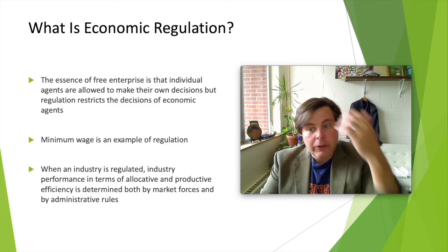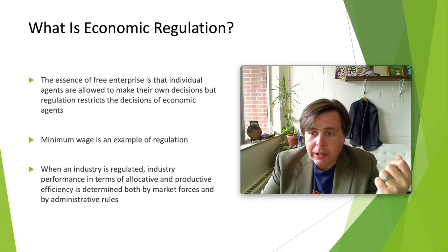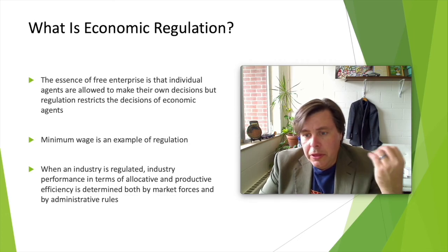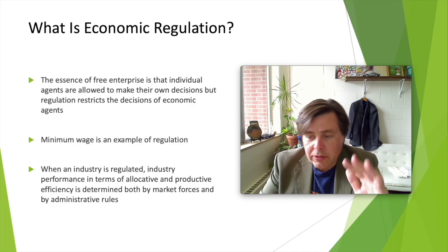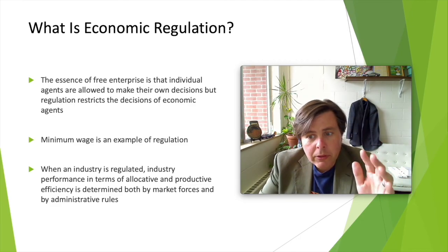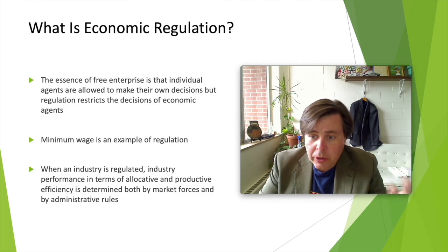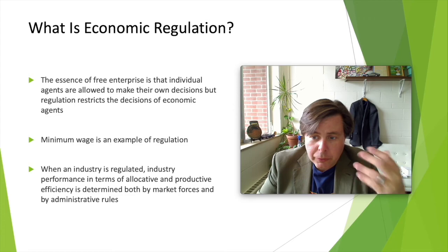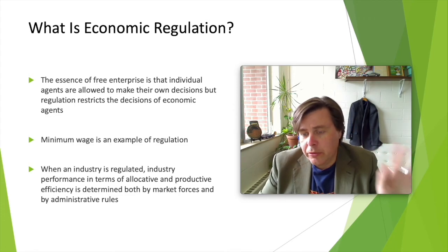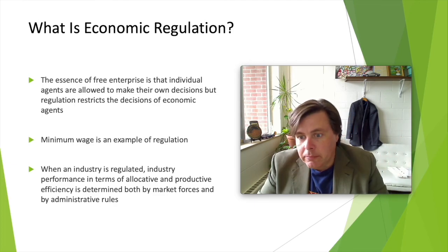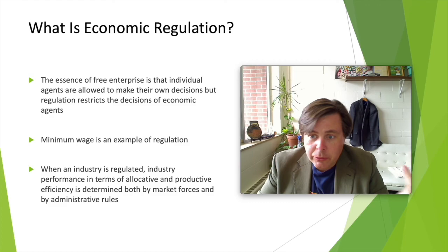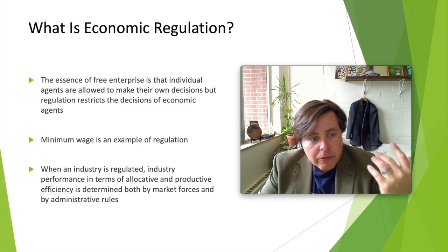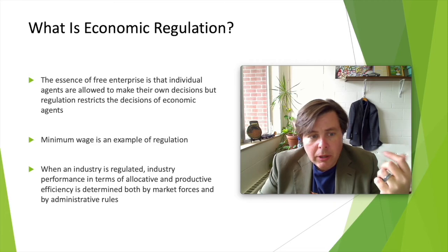In a free society — and certainly the United States would consider itself a free society — the principles, the culture, the mores, and the legal structure of the society are set up to really allow individuals to do as they would. So they're liberal societies. When we interact together as a society, our free actions can impinge upon the freedoms of others, and so a free society has to, to some extent, limit the liberties of the individual.